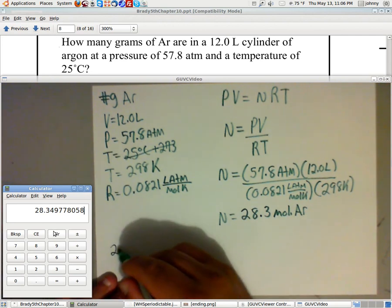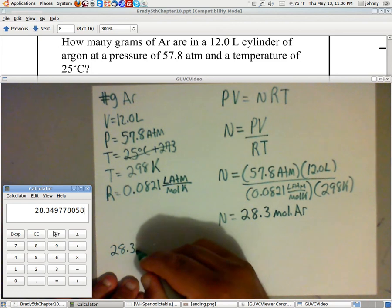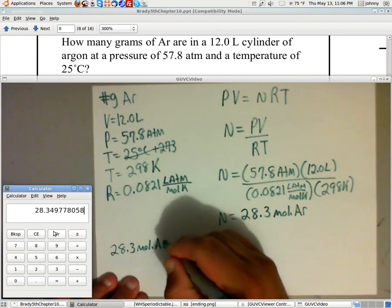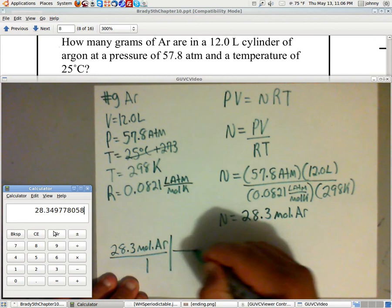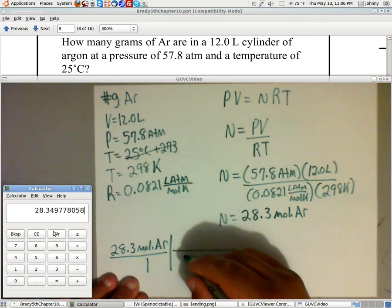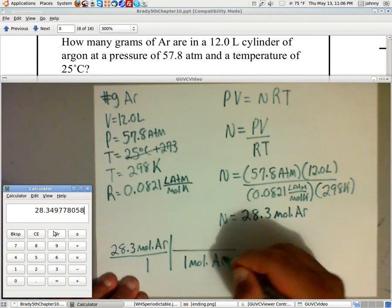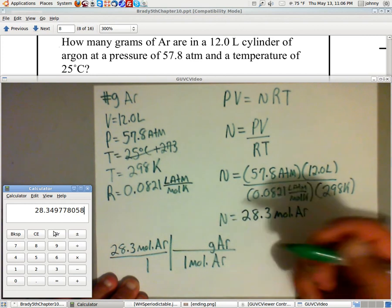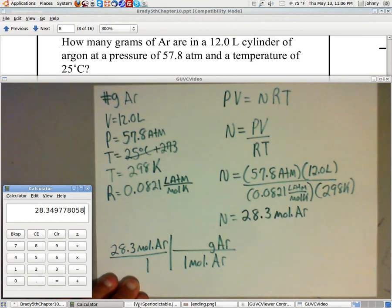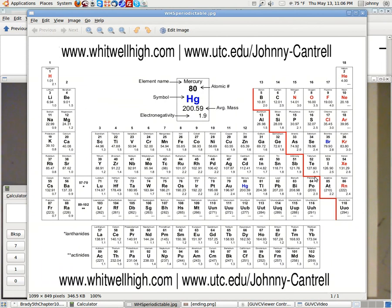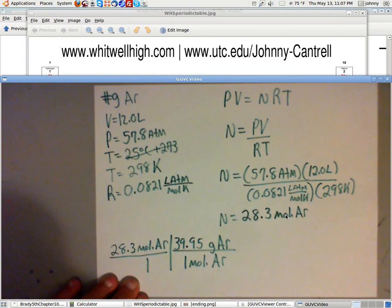So I take 28.3 moles of argon, put it over one. And then down here, I'm going to write one mole of argon is how many grams of argon. Well, I need a periodic table for that. I've got one right here. Now, if you look at the periodic table, you'll see the argon is 39.95. So let's pull that back up. That's where I got the 39.95 from.